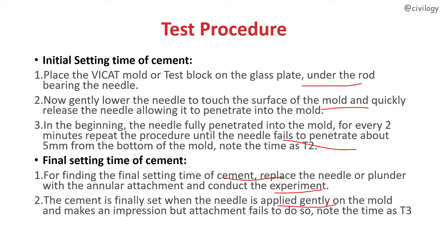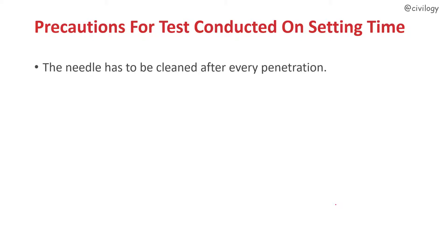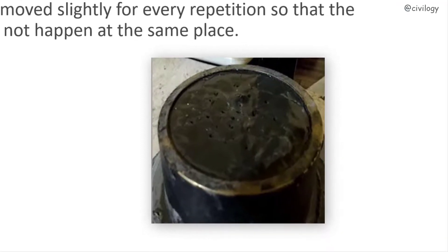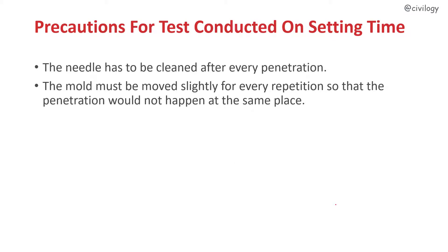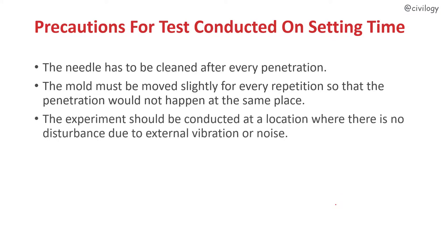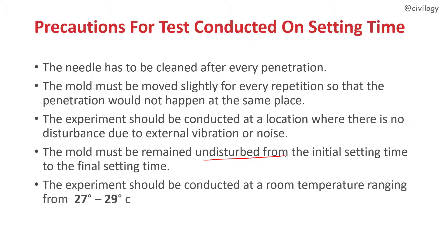Precautions to be taken while conducting the experiment: the needle must be cleaned after every penetration. The mold must be moved slightly for every repetition so that penetration does not happen at the same place. The experiment should be conducted at a location free from external vibration or noise. The mold must remain undisturbed from initial to final setting time. The experiment should be conducted at a room temperature ranging from 27 to 29 degrees Celsius.